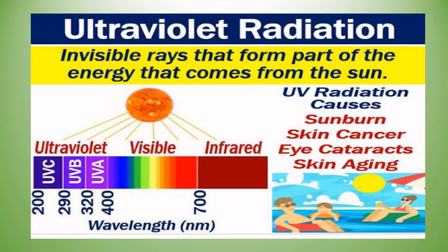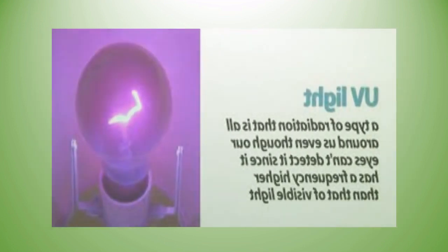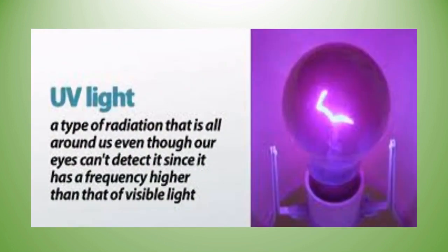Now let us see about ultraviolet radiation. UV consists of invisible rays that form part of the energy that comes from the sun. Ultraviolet light is a type of radiation that is all around us, even though our eyes cannot detect it, since it has a frequency higher than that of visible light.